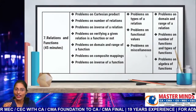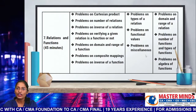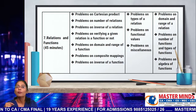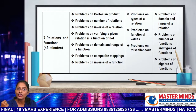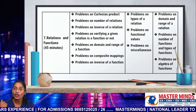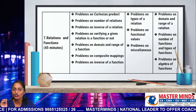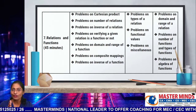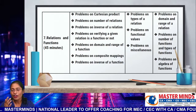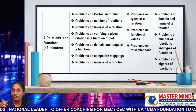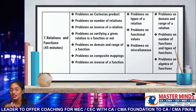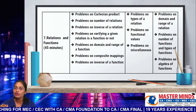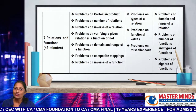The next topic is Relations and Functions. Spend 45 minutes on relations and functions. Highest priority models: problems on Cartesian product, problems on number of relations, problems on inverse of a relation, problems on verifying whether a given relation is a function or not, problems on domain and range of a function, problems on composite functions, and problems on inverse of a function. Second priority: problems on type of a relation, problems on functional values, and problems on miscellaneous. Third priority: problems on domain and range of a relation, problems on number of functions and types of functions, and problems on algebra of functions.